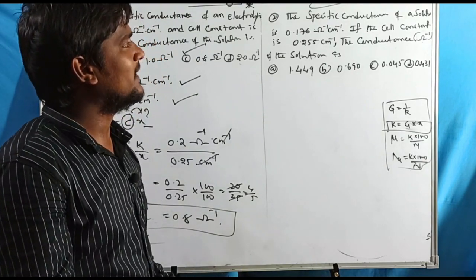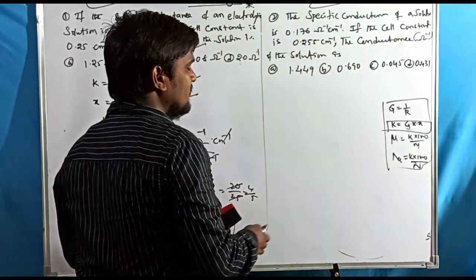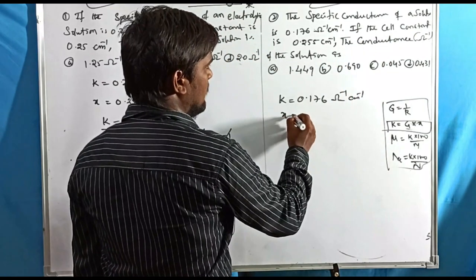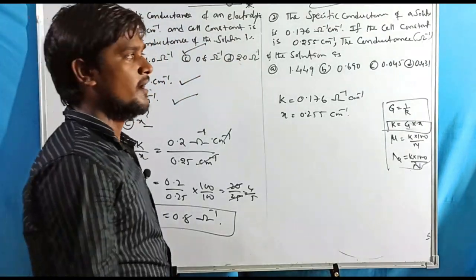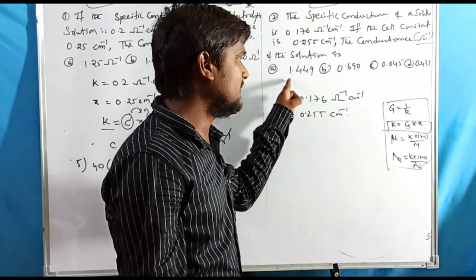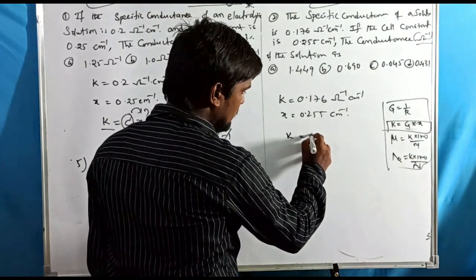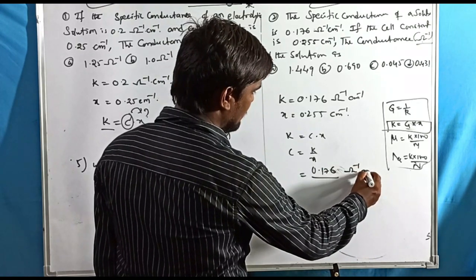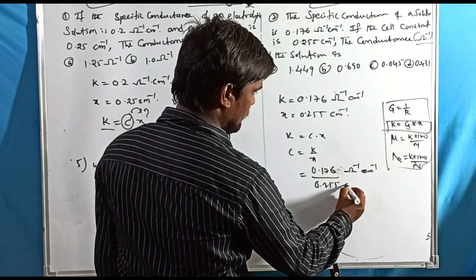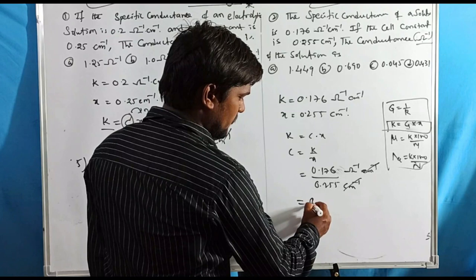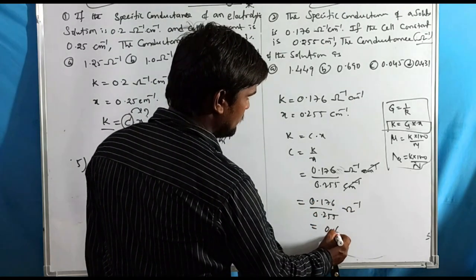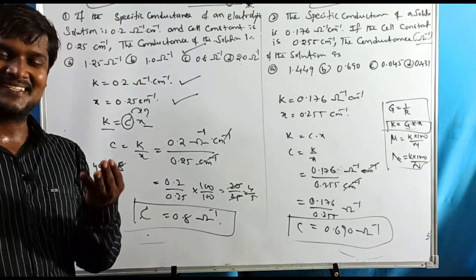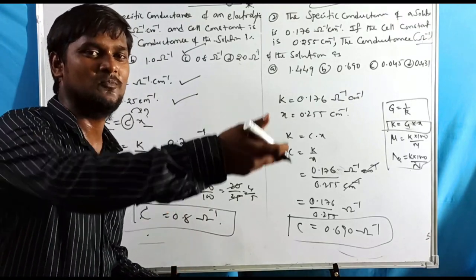Problem 2: The specific conductance of a solution is 0.176 ohm⁻¹·cm⁻¹, and the cell constant X = 0.255 cm⁻¹. Find the conductance in ohm⁻¹. G = κ/X = 0.176 ohm⁻¹·cm⁻¹ / 0.255 cm⁻¹ ≈ 0.690 ohm⁻¹. These types of questions are 4-mark questions in CSIR — very helpful, score-boosting topics in electrochemistry.